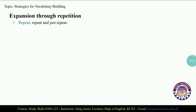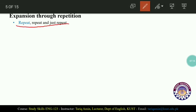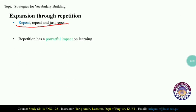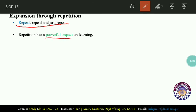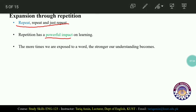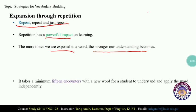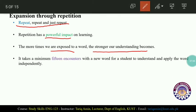The second strategy is expansion through repetition — repeat, repeat, and just repeat. Repetition has a powerful impact on learning. The more times we are exposed to a word, the stronger our understanding becomes. It takes a minimum of 15 encounters with a new word for a student to first understand it and then apply the word independently in different contexts.